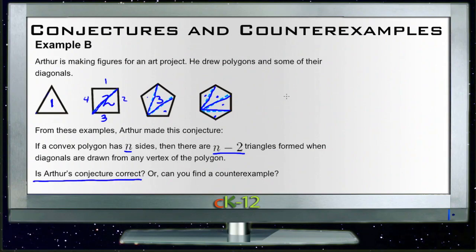Can we find a counterexample? Well, no, because no matter how many sides we draw, there's always going to be those two first vertices right next to whatever vertex we choose that are going to be connected by the lines that are a part of the side of the figure. So no matter how many sides we draw, we're going to have two less than that number of triangles. So there isn't a counterexample. That proves to be a correct conjecture.